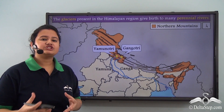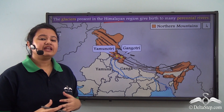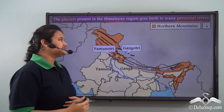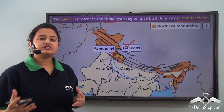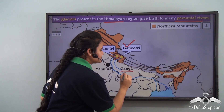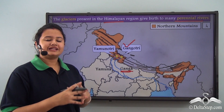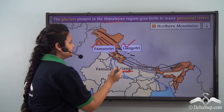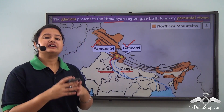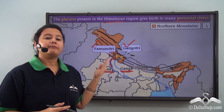The glaciers present in the Himalayan region melt with the onset of summer season and give rise to many perennial rivers. One such glacier is the Gangotri glacier, which is the largest glacier of the Himalayan region. This glacier melts to give birth to the river Ganga, so Gangotri is the source of the Ganga river. Another important glacier is the Yamunothri glacier, which melts and gives birth to the Yamuna river. Thus the Himalayan region is home to many large glaciers which are the sources of many perennial rivers.